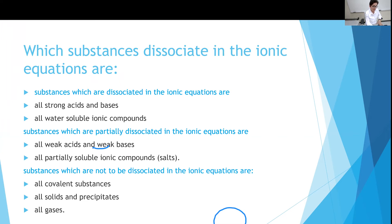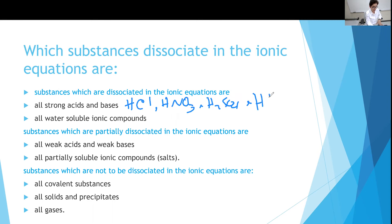What types of compounds are expected to dissociate? Substances which are broken apart in the ionic equation are strong acids and bases — these compounds are soluble in water. Examples of strong acids include HCl, HNO3, H2SO4, and HBr; they dissociate fully in aqueous solution, so when writing the ionic equation, you break them down. Strong bases, such as hydroxides of group 1A elements like sodium hydroxide and potassium hydroxide, also dissociate in aqueous solution.